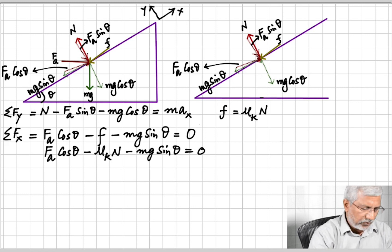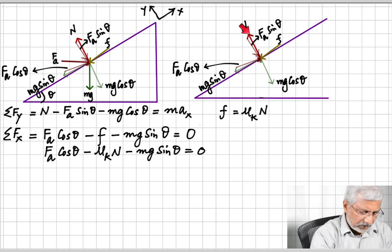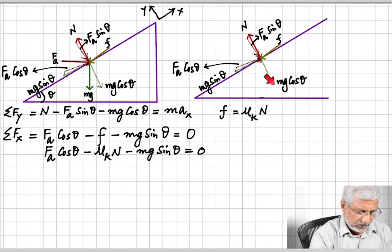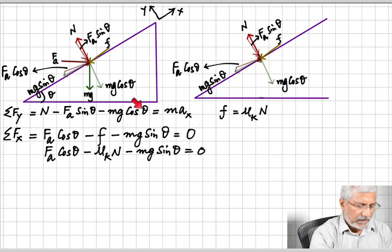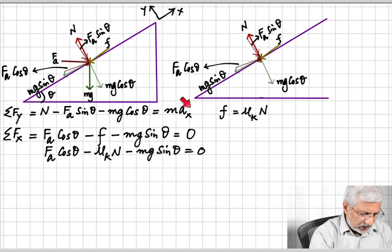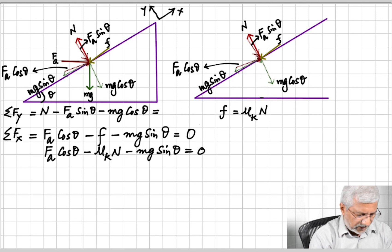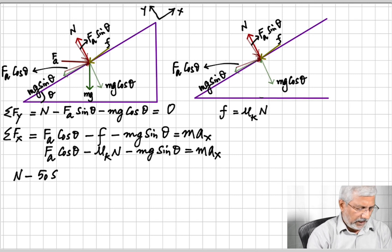On the right-hand side I've erased mg and Fa since they're represented by their components. Taking net force along the y-axis: N is up, Fa sine θ is down, and mg cosine θ is also down. So: N − Fa sine θ − mg cosine θ = ma_y. But there is no acceleration on the y-axis, so this equals zero.